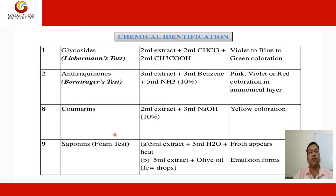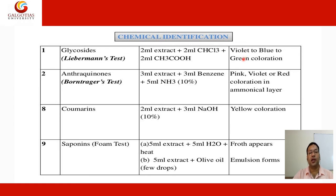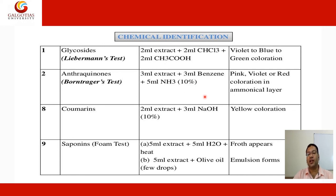Chemical identification tests for glycosides: the Liebermann test — take 2 ml of the glycoside sample, add 2 ml of carbon tetrachloride plus 2 ml of acetic acid; a violet to blue or green color is observed, indicating the presence of glycoside. For anthraquinone glycosides, the Borntrager test is used: 3 ml of extract plus 3 ml of benzene plus 5 ml of 10% ammonia solution; a pink, violet, or red color in the ammonia layer indicates the presence of anthraquinone glycosides.